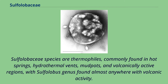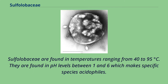Sulpholobaceae species are thermophiles, commonly found in hot springs, hydrothermal vents, mud pots, and volcanically active regions, with the Sulpholobus genus found almost anywhere with volcanic activity. Sulpholobaceae are found in temperatures ranging from 40 to 95 degrees Celsius, and in pH levels between 1 and 6, which makes specific species acidophiles.